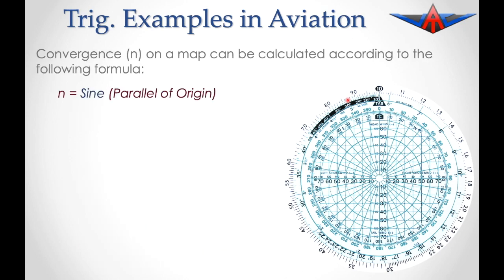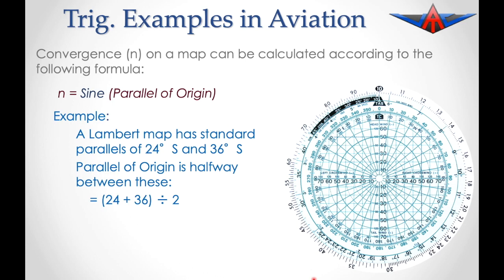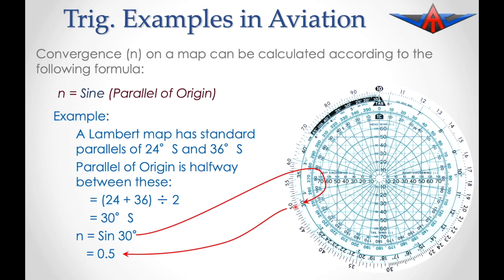Another possible calculation is convergence on a map. The formula is: convergence (n) = sine of the parallel of origin. For example, a Lambert chart with standard parallels of 24 degrees south and 36 degrees south has a parallel of origin halfway between, so (24 + 36) / 2 = 30 degrees south. The convergence is the sine of 30 degrees, which gives us 0.5.